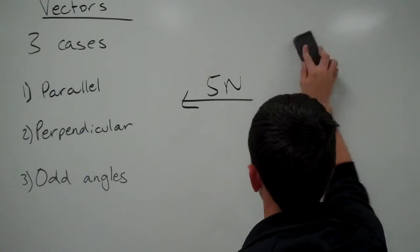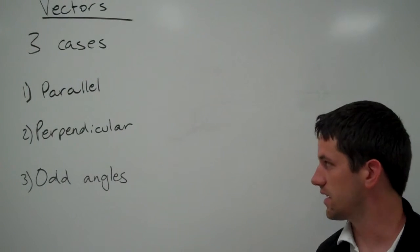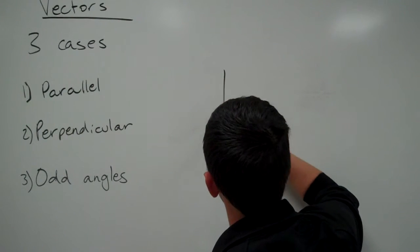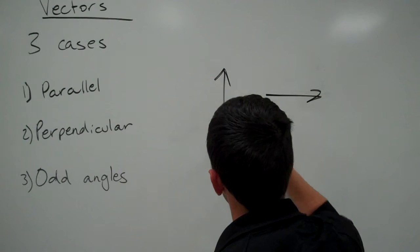Next thing we're going to look at is what if those vectors are perpendicular? Perpendicular means they're at right angles from each other. So if one's going up, maybe the other one is going to the right.